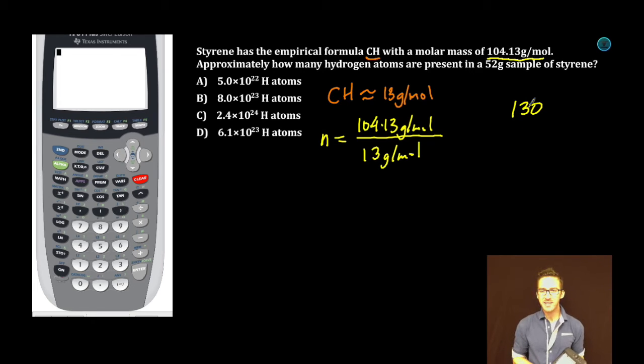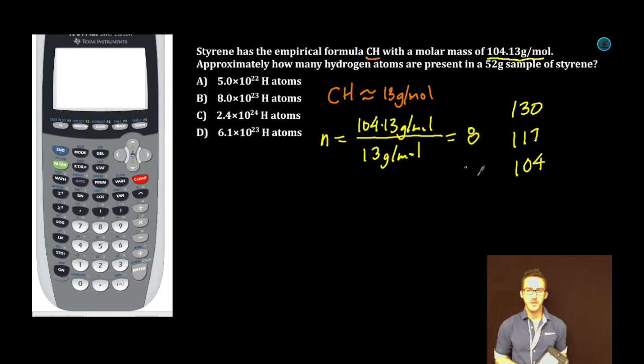Then I'm just going to do some quick math here. If I had 117, that would be 9 times. And then 104 would be 8 times. So our molecular formula is 8 times larger than the empirical formula, which means that styrene's true molecular formula is going to be C8H8.